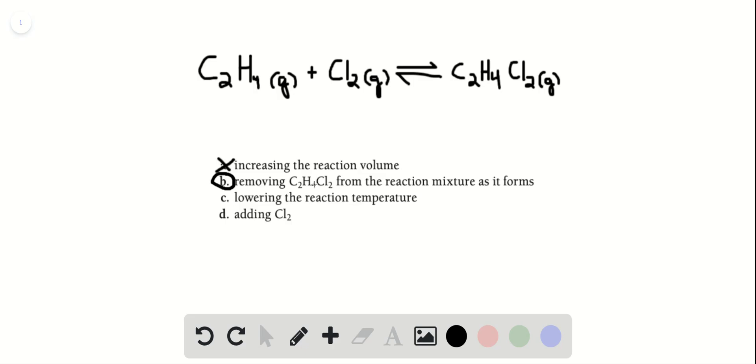C says lowering the reaction temperature. They told us that this was an exothermic reaction, so you can think of heat as a product. If heat is a product, and you were lowering the temperature, you were basically removing that product.